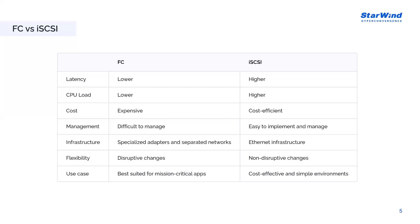Unfortunately, Fiber Channel does come with drawbacks. One major consideration is cost — Fiber Channel SANs require specialized hardware like Fiber Channel adapters and switches, which can be more expensive compared to iSCSI. Moreover, setting up a separate ethernet network for non-storage communication adds to the overall cost. Managing a Fiber Channel SAN can also be more complex and time-consuming, requiring special skills. The learning curve for managing Fiber Channel SANs is higher compared to iSCSI.